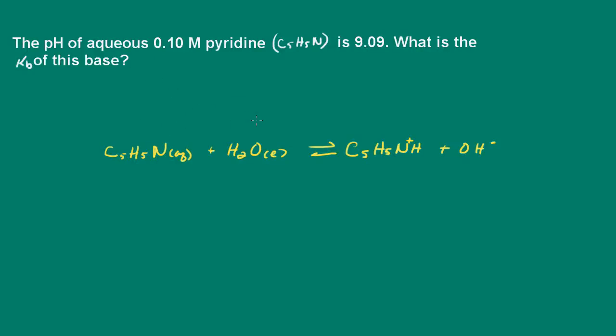The pH of an aqueous 0.1 molar pyridine solution is 9.09. What is Kb of this base? So what they want is the base dissociation constant or the base hydrolysis constant.